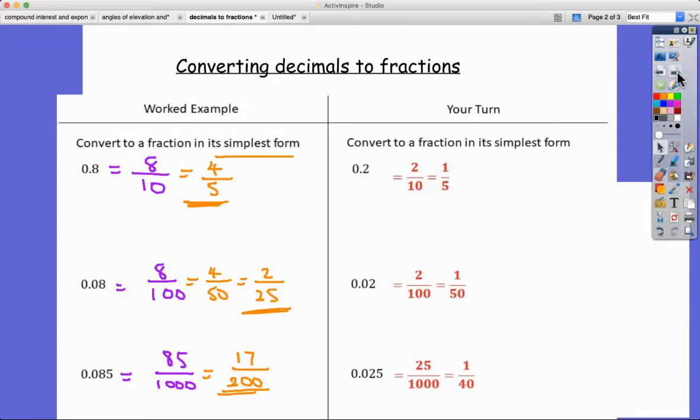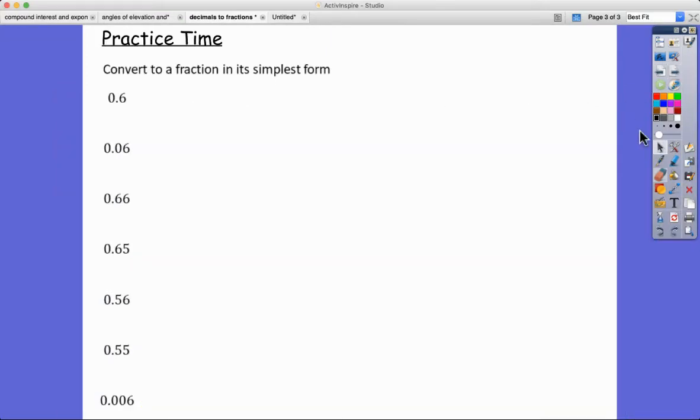Let's go and have a look at some more practice and work through these together. This one we've got one decimal place, it's out of ten, it's six out of ten. I'm going to cancel that straight down to three fifths. Here I've got out of a hundred, it's two decimal places, six on top. That's got to be three fiftieths.